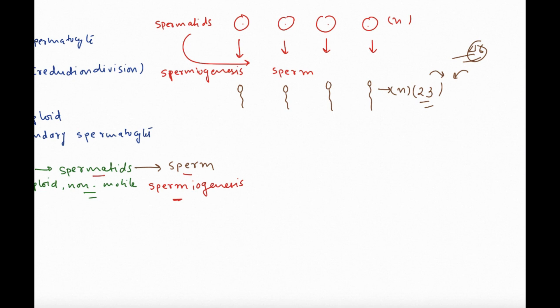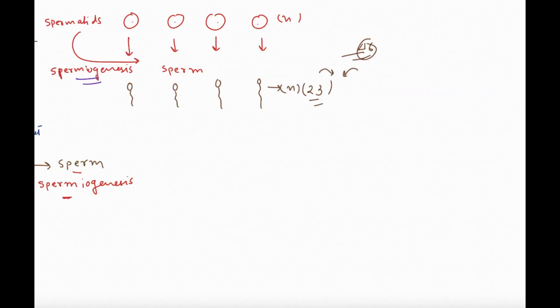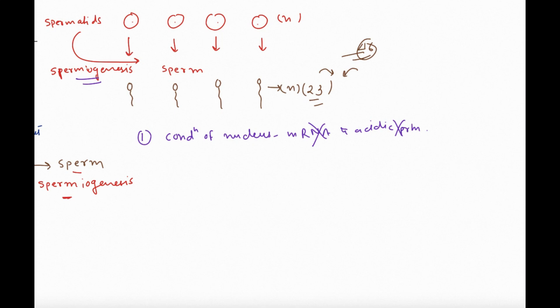The first important change in spermiogenesis is condensation of the nucleus. This happens by losing mRNA and acidic proteins, leaving only DNA and basic proteins — that is how the nucleus is condensed.